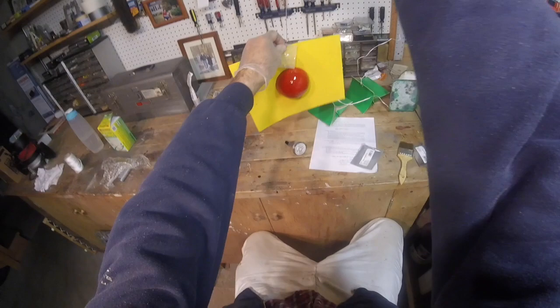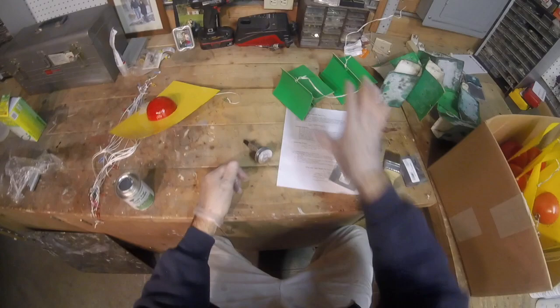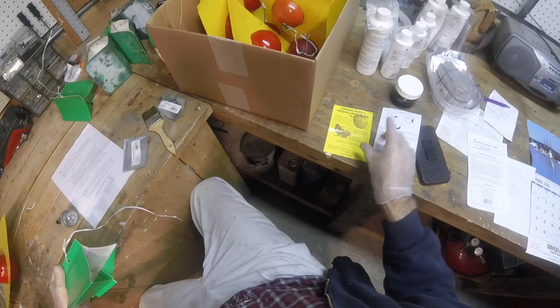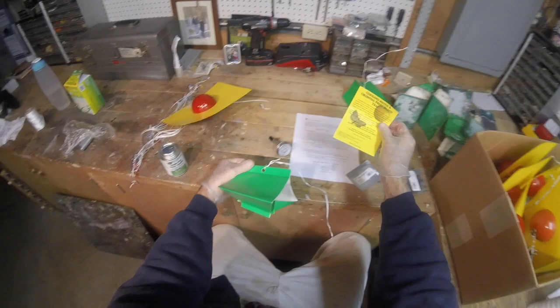So another product that we do is these are for codling moth. It's another thing that attacks your fruit trees, attacks your pears, plums, peaches, and cherries. Actually, this product here too, the maggots also like to attack the cherry trees and the plum trees, so we use it for that around that area too. But this is another one, these are the codling moth traps, and you can also get these from Garden Alive. I'm sure other companies probably also carry similar products.